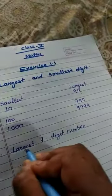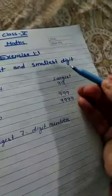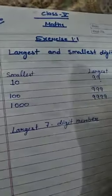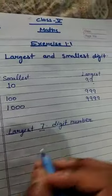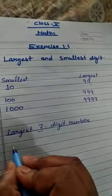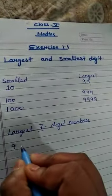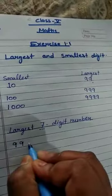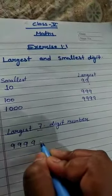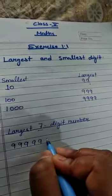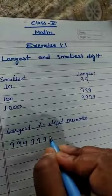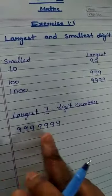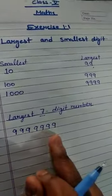Now you have seen the largest number. For us, what we have asked is 7 digits. So 7 digits means 7 times 9 — that is the largest 7-digit number: 9,999,999.